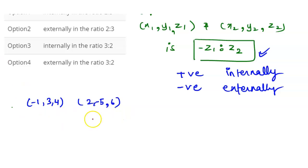So we can write here -Z1:Z2. So -4:6, that means -2:3.